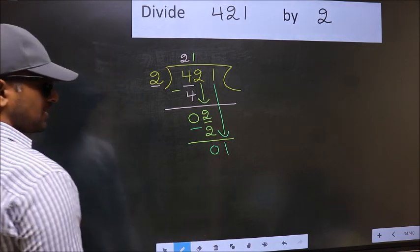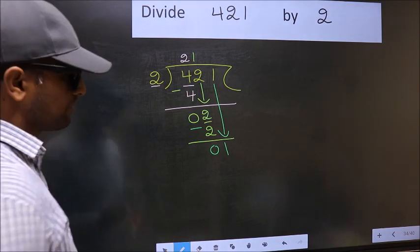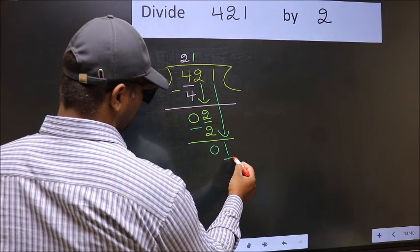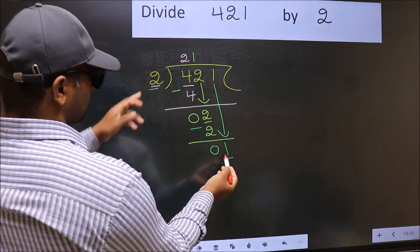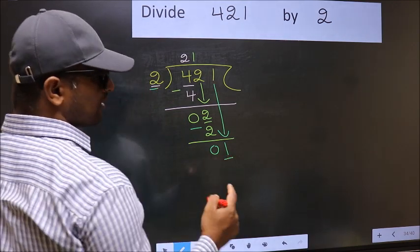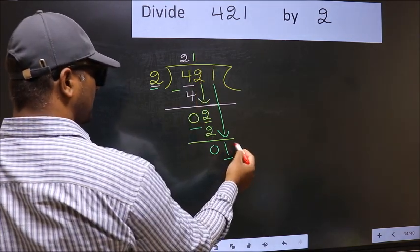After this step, the mistake happens. And the mistake is this. Here we have 1 and here 2. 1 is smaller than 2. So what many do is they put a dot and take 0 here.